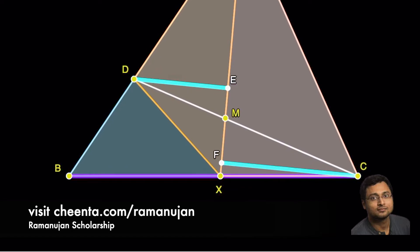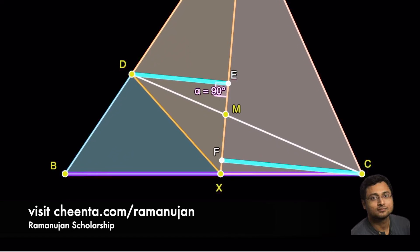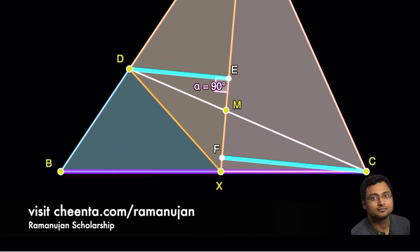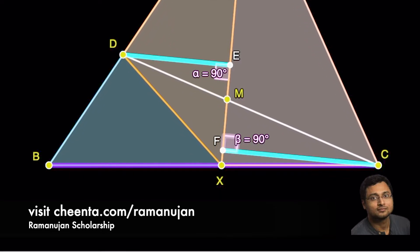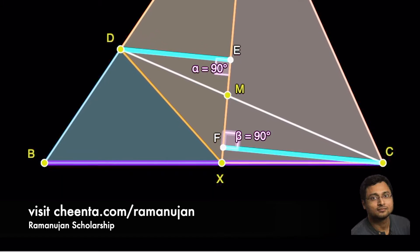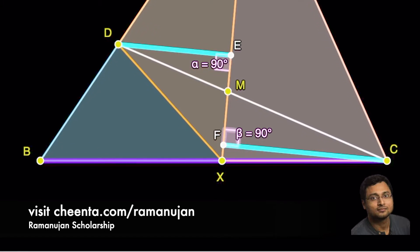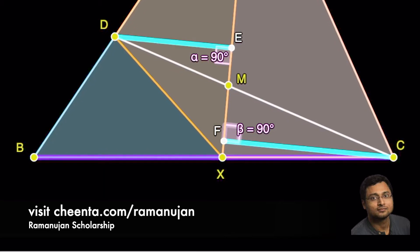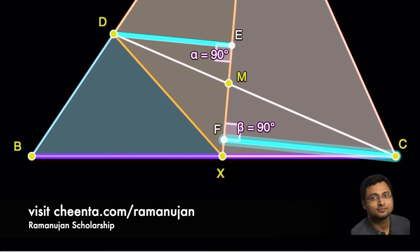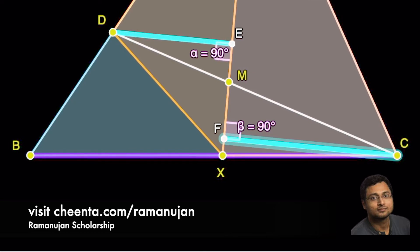We also know that the angle DEM is equal to the angle CFM because both are 90 degrees by construction. Finally, DE is parallel to CF, DEM is equal to CFM. Can you tell me why?